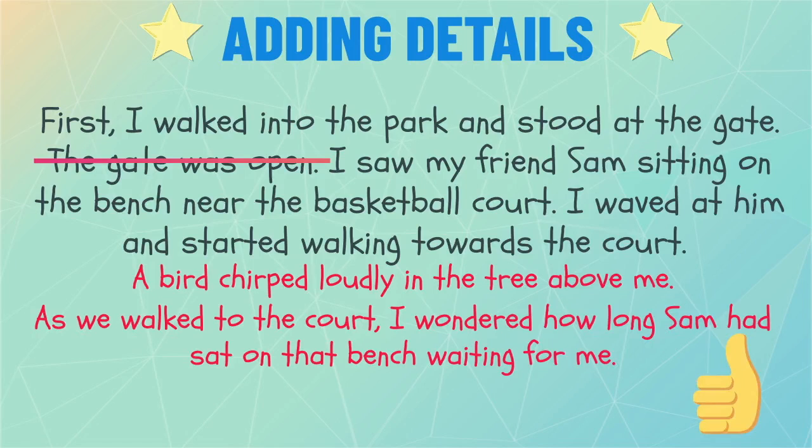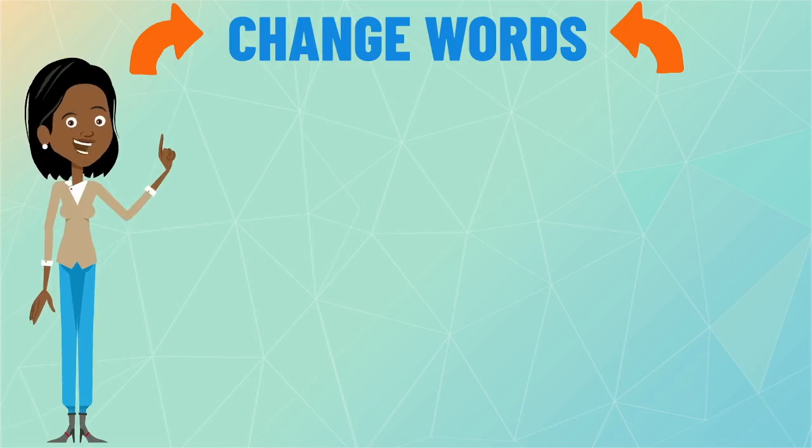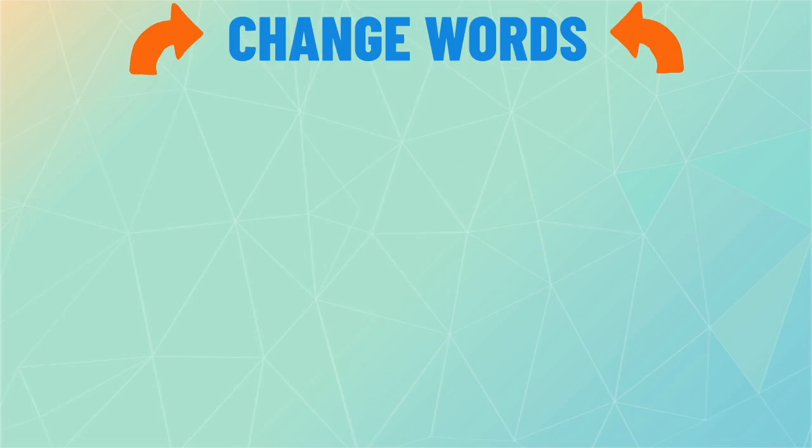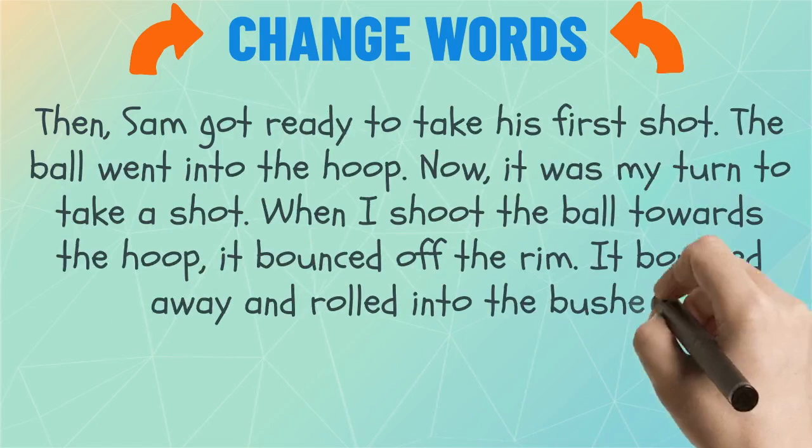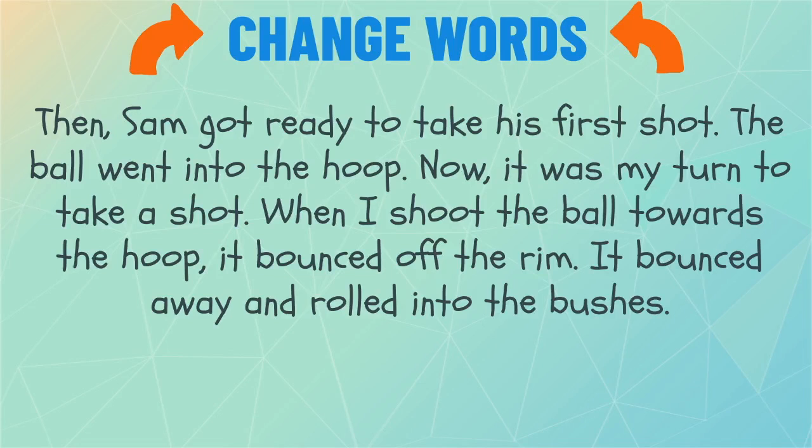Here is the next page of my draft. On this page, I am going to change words to revise my story. Then, Sam got ready to take his first shot. The ball went into the hoop. Now, it was my turn to take a shot. When I shoot the ball towards the hoop, it bounced off the rim. It bounced away and rolled into the bushes.